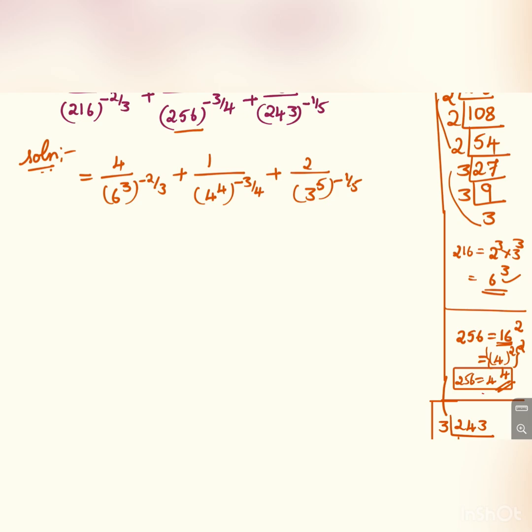4 to the power 4, because we can cancel 3 and 3 here. We will get 4 by 6 to the power minus 2, plus we can cancel 4 for 1 by 4 to the power minus 3, plus we can cancel 5 and 5 here, 2 by 3 to the power minus 1.